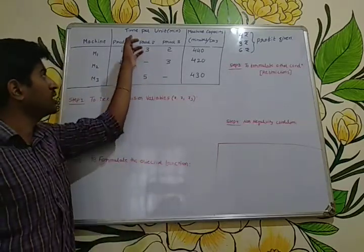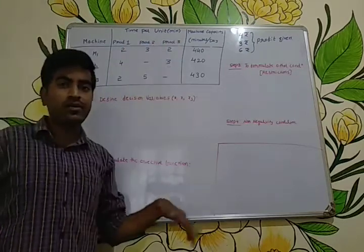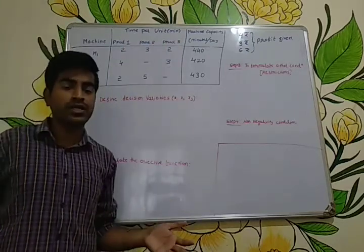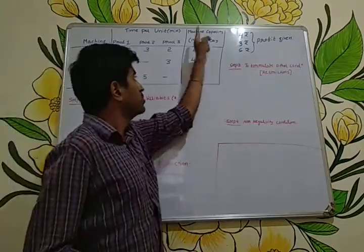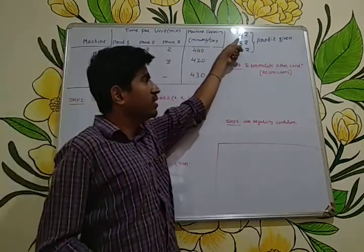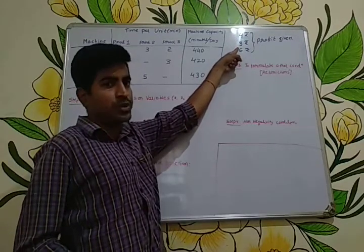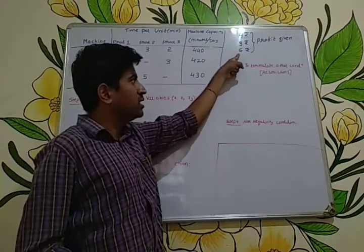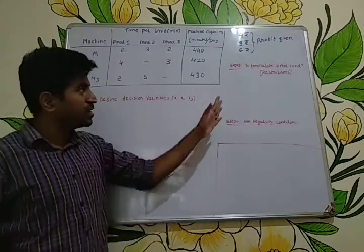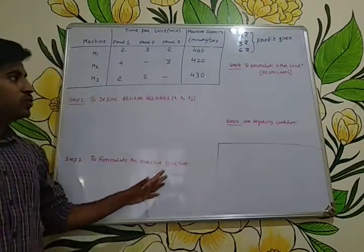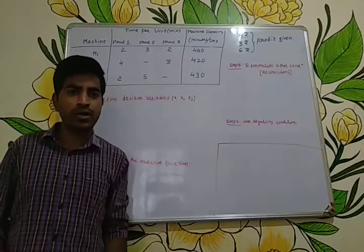It is required to determine the daily number of units to be manufactured for each product. The profit per unit for product 1, 2, and 3 are 4 rupees, 3 rupees, and 6 rupees respectively. Based on these conditions we need to formulate the linear programming problem.